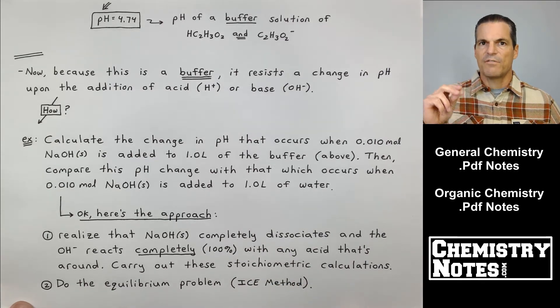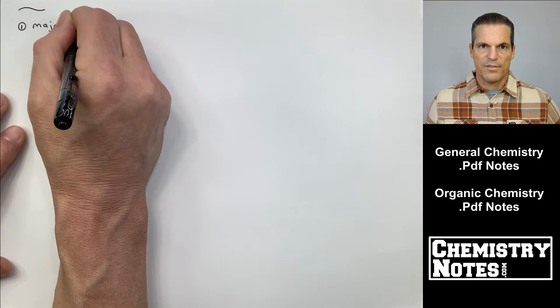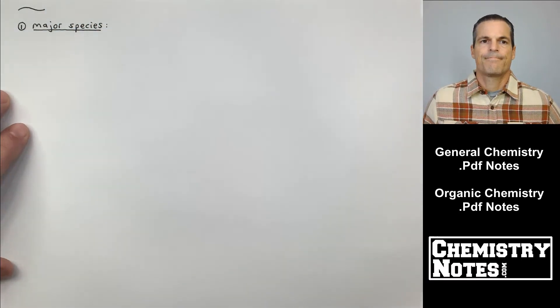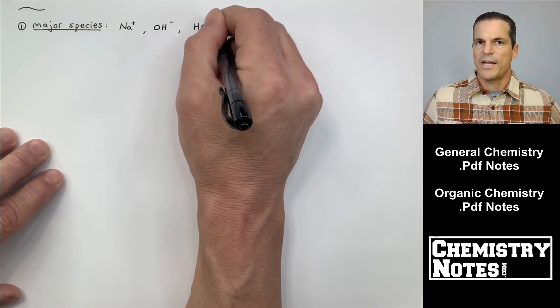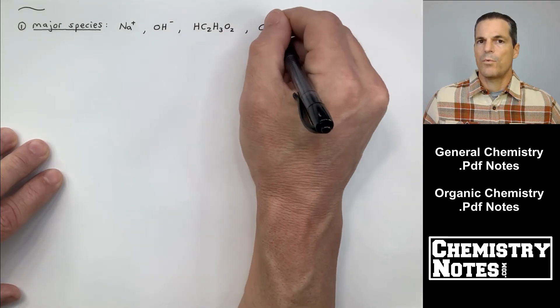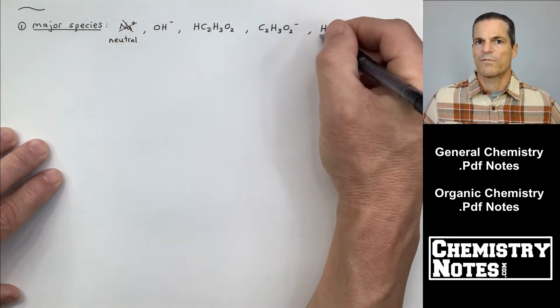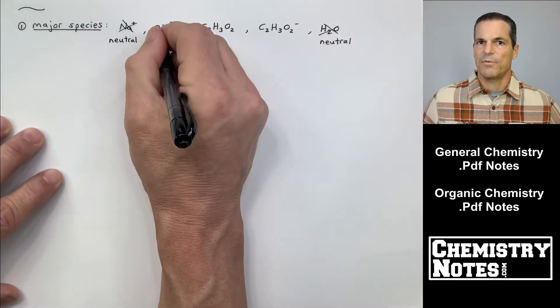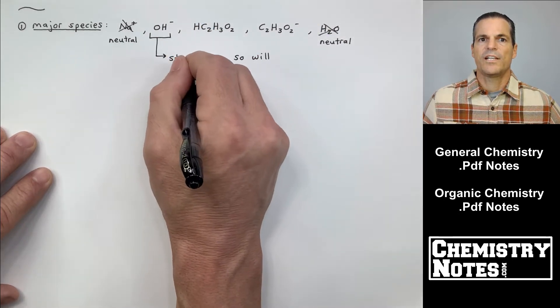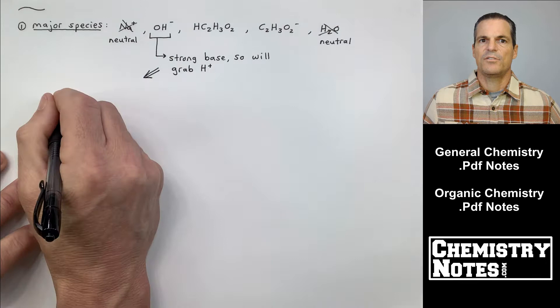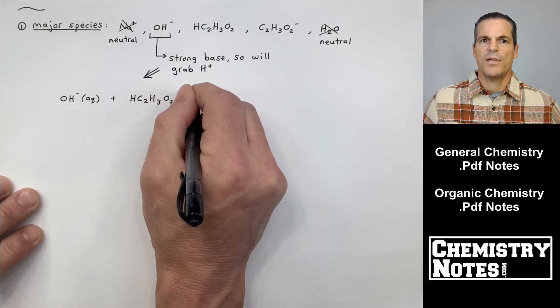We'll have a before and then after. We're going to do that right now. And then step two is just, now that you've done step one, now do your ice method. So number one, major species. Before any reaction takes place, I have Na+, OH-, I have HC2H3O2, my weak acid. I have C2H3O2-, my common ion from acetate. And I have water, of course. Water is neutral. The Na+, that came from sodium hydroxide, is neutral. Now, OH- is a strong base. So who's he going to attack? He's going to attack the acetic acid, HC2H3O2. Let's set that up. OH- will react with HC2H3O2.